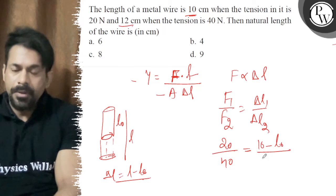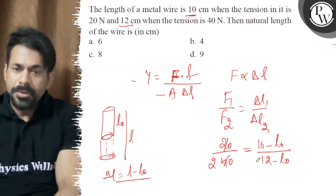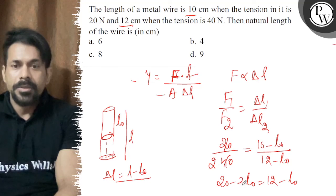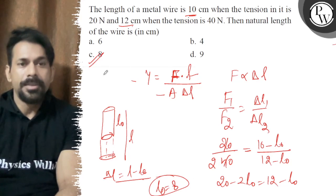Then it becomes 12, 12 minus L naught. So 1 by 2, so 20 minus 2 L naught is equal to 12 minus L naught. So finally you will get that L naught is 8. The right answer is C. All the best.